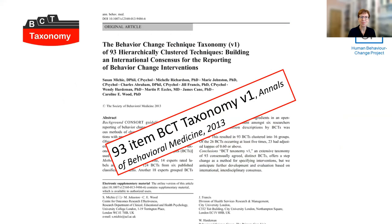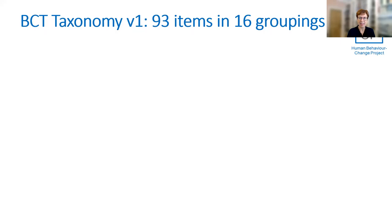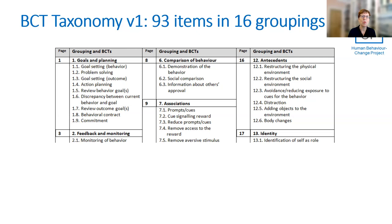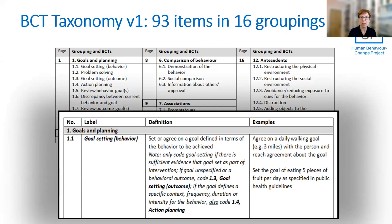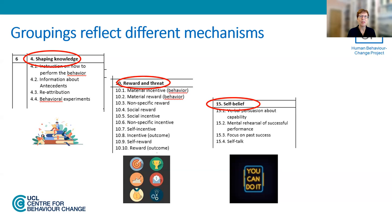In 2013, we published the 93-item Behaviour Change Technique Taxonomy in Annals of Behavioural Medicine. These 93 items are in 16 groupings. For example, if you look at the top left-hand corner, you'll see the first of the 16 groupings — goals and planning — which has nine different behaviour change techniques. For every single technique, there is a definition which also distinguishes it from what it's not, and also examples of it. These groupings reflect different mechanisms, such as shaping knowledge, reward and threat, and self-belief — all different ways in which interventions have their effect.